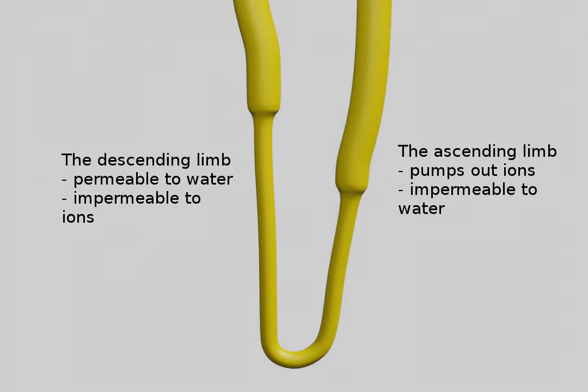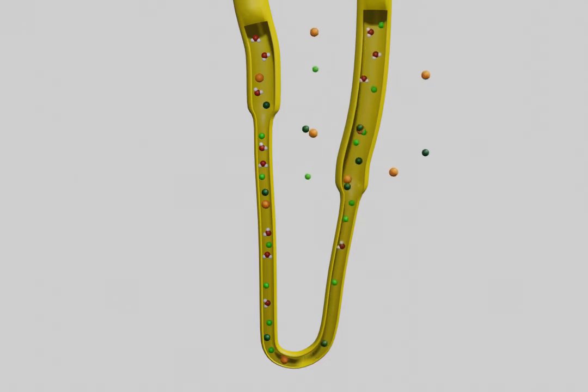On the thick ascending limb, we pump out a bunch of ions. This creates a concentration gradient. On the descending limb, the water passively flows into the area of higher concentration. So this is a really clever way of reclaiming water from the filtrate.